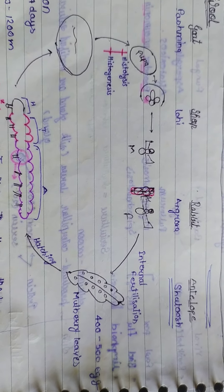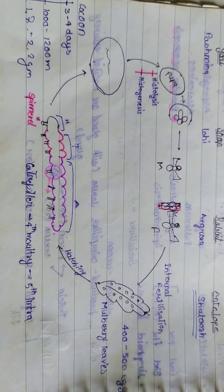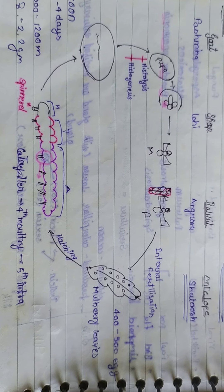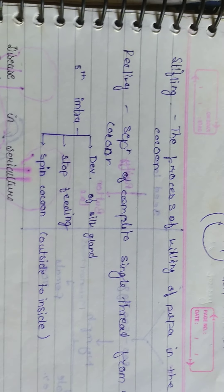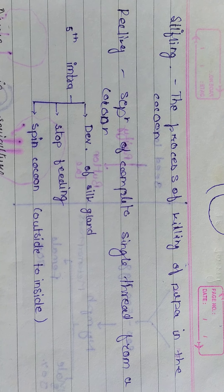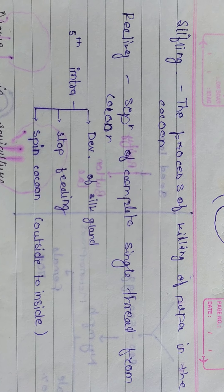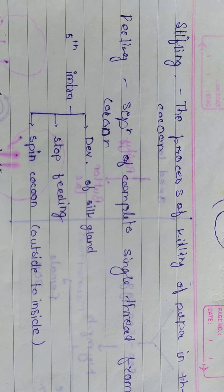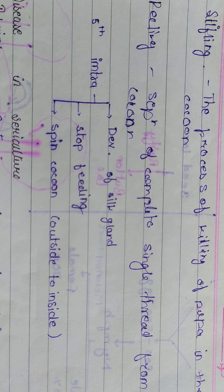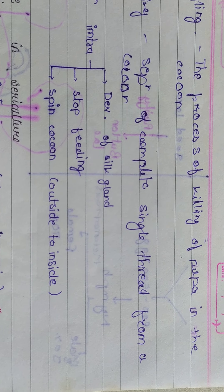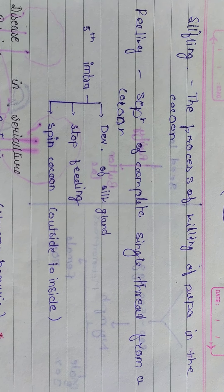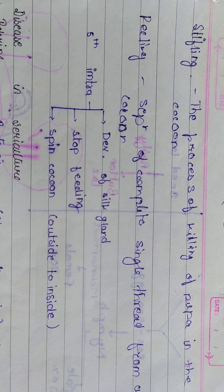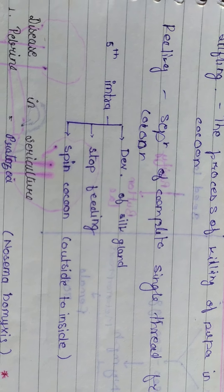In silk processing, stifling is the process of killing the pupa inside the cocoon. Pilling is the process of separating a complete single thread from a cocoon. The cocoon thread can extend up to 1200 meters as a single continuous filament.